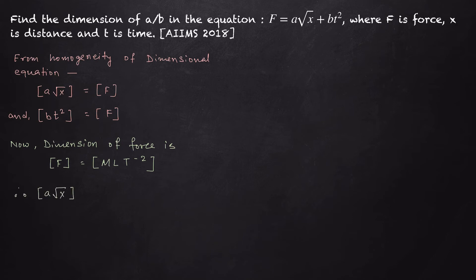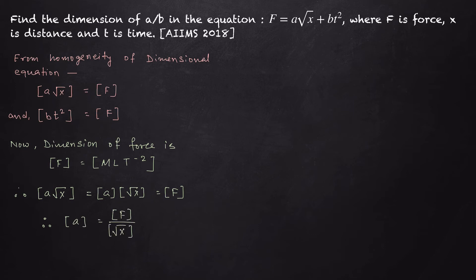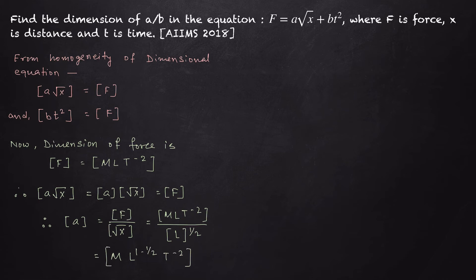We can write: dimension of a·√x = dimension of a × dimension of √x = dimension of F. Therefore, dimension of a = dimension of F / dimension of √x. Since x is length, √x has dimension L^(1/2). So dimension of a = MLT⁻² / L^(1/2) = ML^(1−1/2)T⁻² = ML^(1/2)T⁻².